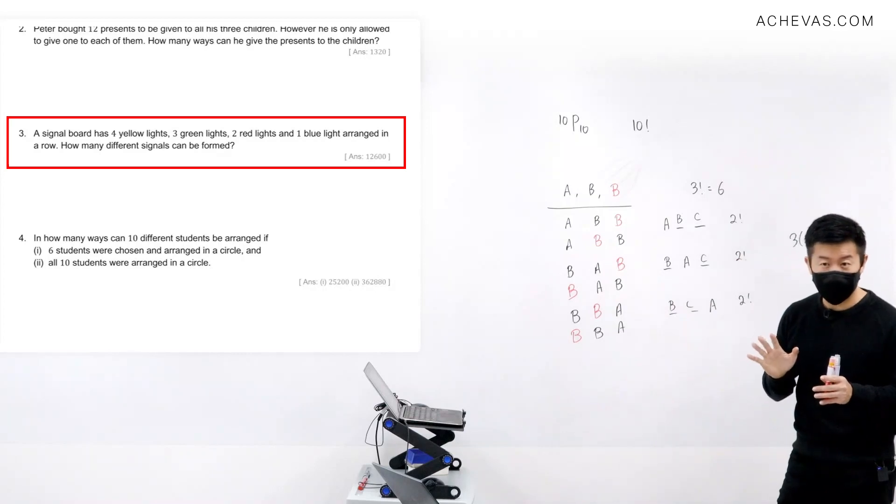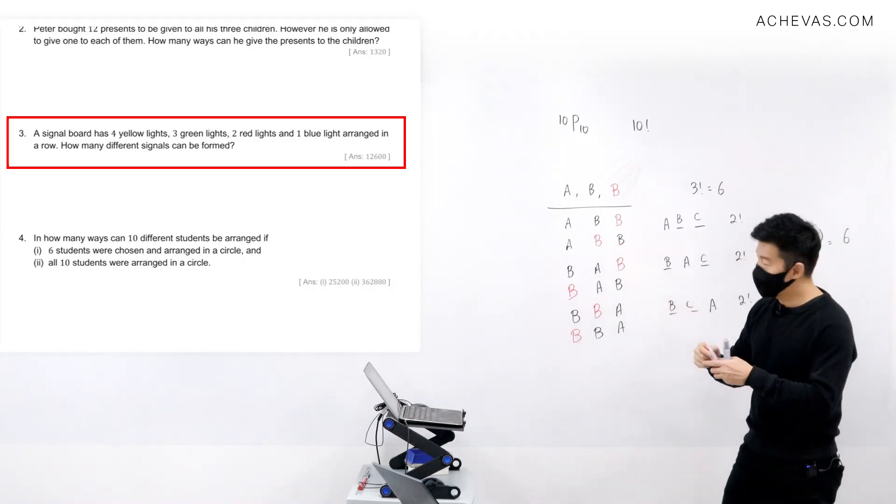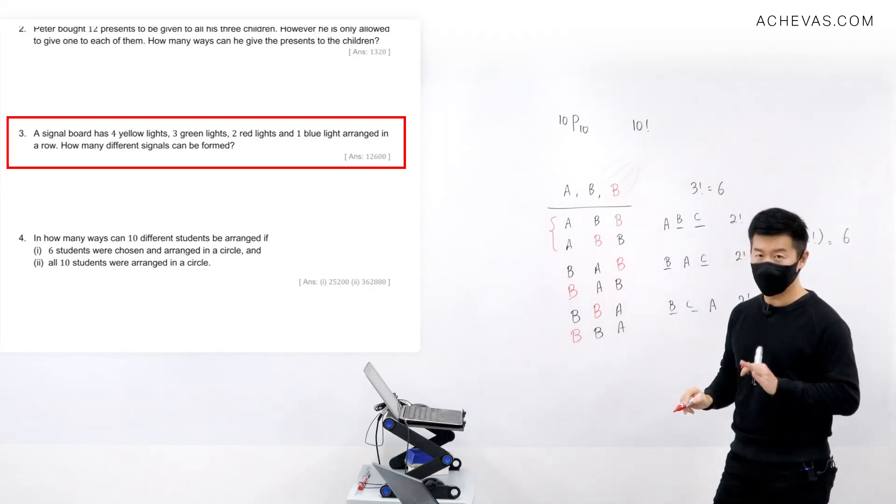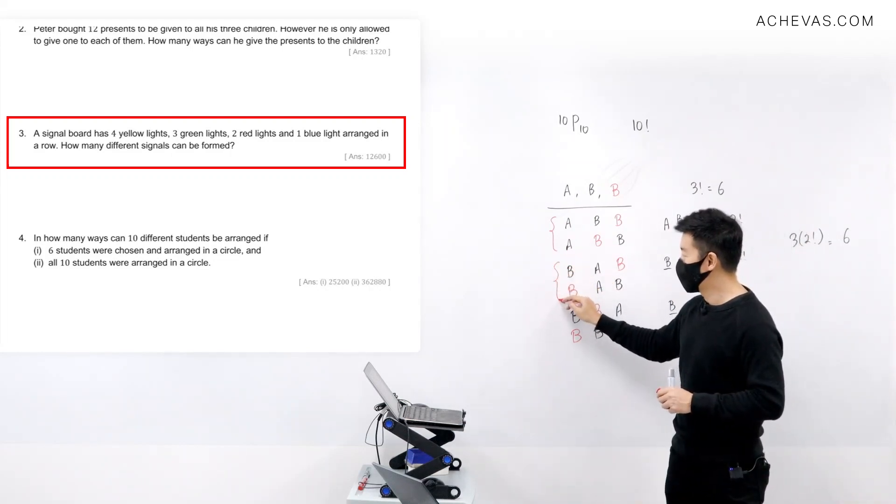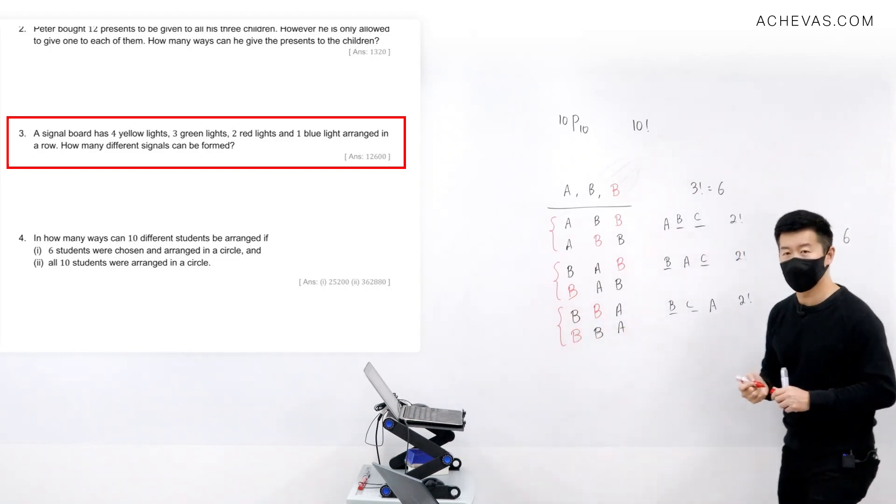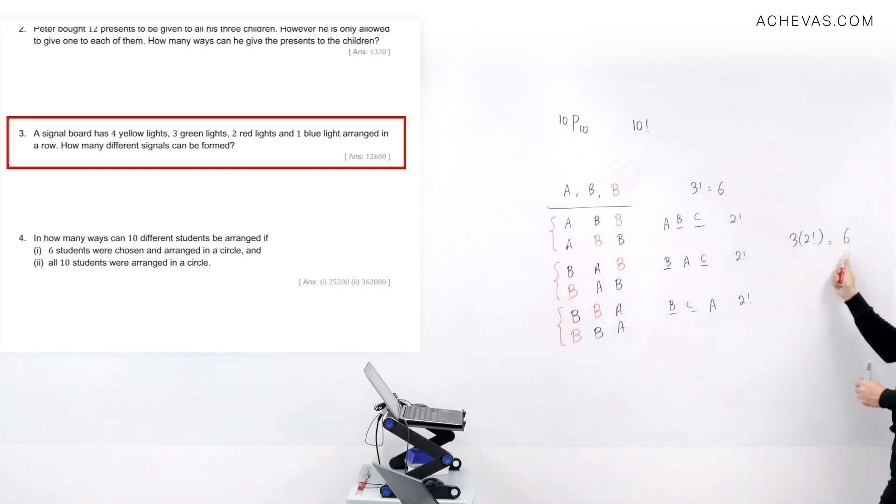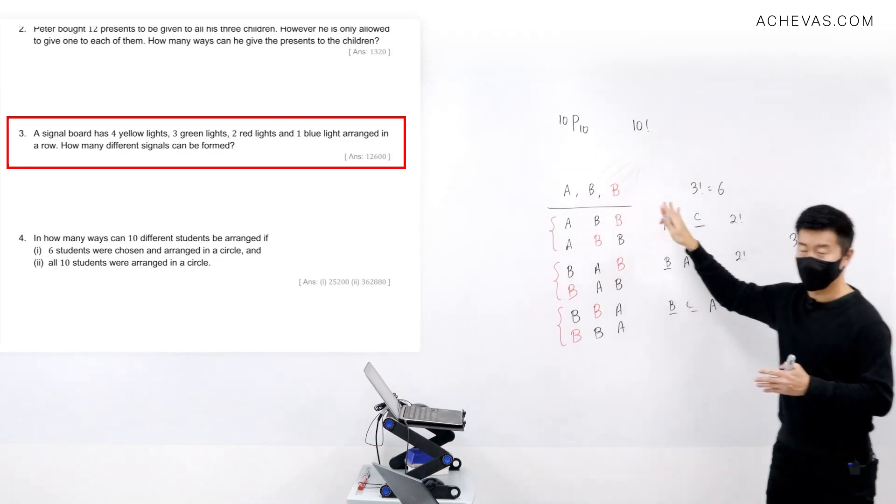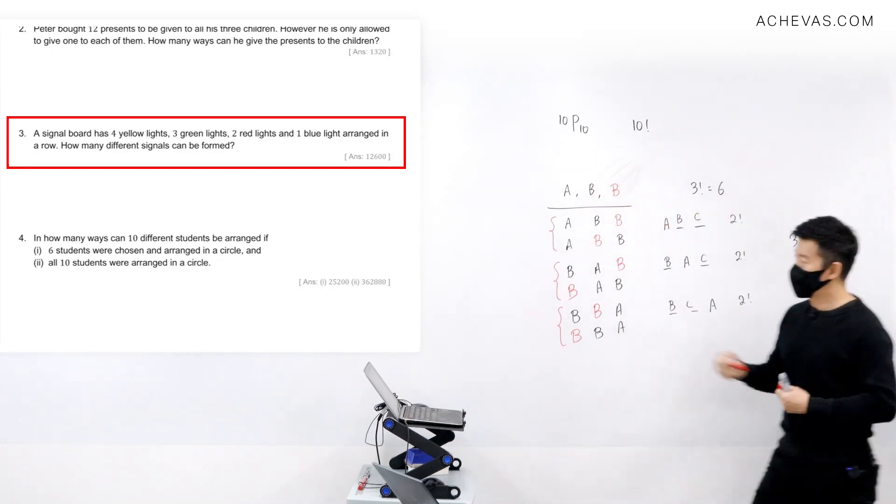So you must be able to see that this and this, they are the same thing. A, B, B. A, B, which means that I'm getting one arrangement. It's not two arrangements, one arrangement. I'm getting one arrangement here, I'm getting the same arrangement here, which means that there's a flaw.